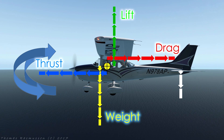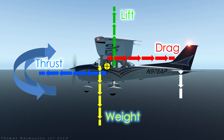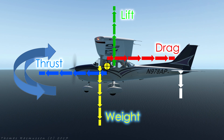As long as nothing changes and ignoring things like wind and turbulence, the aircraft will stay balanced all day long. In reality however we will from time to time change our thrust or speed, or lift and weight will change as we burn fuel or drop payload. Whenever any of these changes occur, the balance of the aircraft will be upset and it will have to be retrimmed.